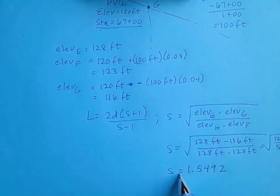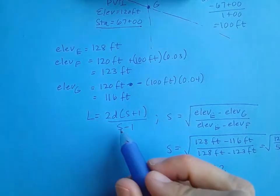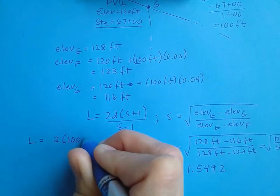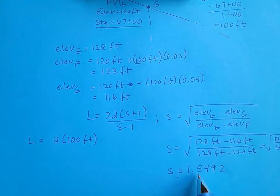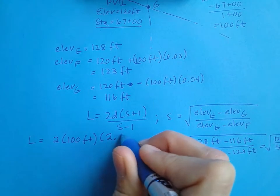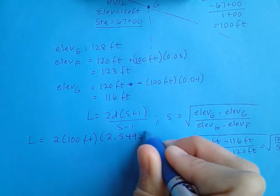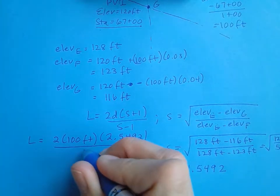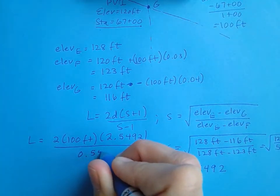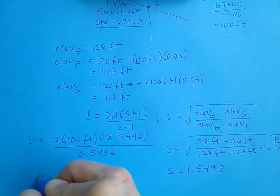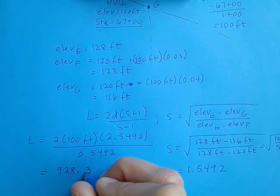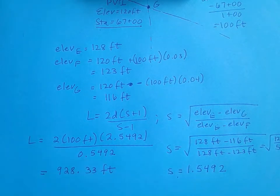Now with S = 1.5492 and d = 100 feet, I plug into the equation L = 2D × (S + 1) / (S − 1). That gives 2 × 100 × (2.5492 / 0.5492), which equals 928.33 feet — the length of that curve.